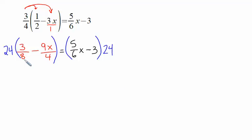24 divided by 8 is 3. 24 divided by 4 is 6. And 24 divided by 6 is 4. But now we have to distribute. 24 times 3 eighths. Try to be as mentally fluid with math as possible. Divide first. 24 divided by 8 is 3, and then 3 times 3 is 9. Keep the subtraction. 24 divided by 4 is 6, and 9 times 6 is 54. So this is going to be a minus 54x.